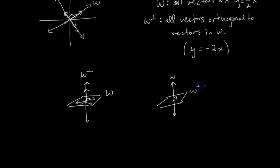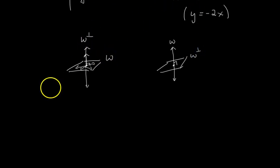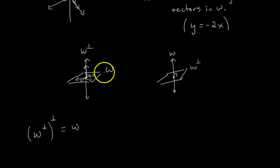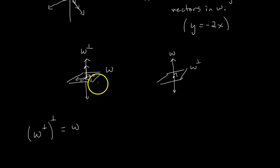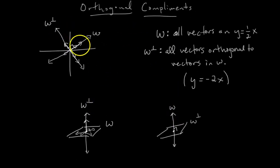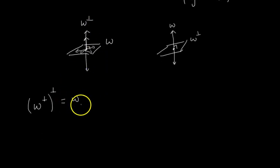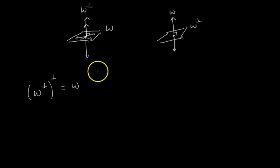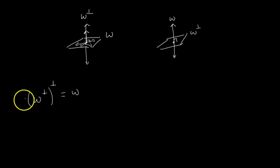Now for some theorems. First: W perp perp equals W. That should make sense — if W is the plane, W perp is the line that pierces it, and the orthogonal complement of that line brings you back to W. In the two-dimensional case: W is a line, W perp is the perpendicular line, and the orthogonal complement of that gives you back the original W.